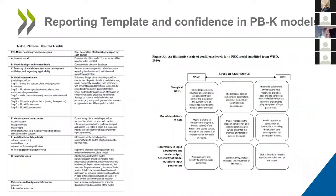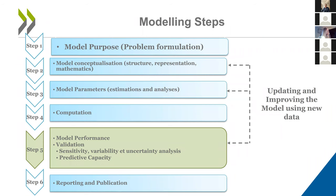As Betty illustrated, the guidance contains a reporting template and a tool to assess confidence in a PBK model. As Cecilia highlighted, we have a number of modeling steps: the model purpose, model conceptualization, parameters, computation, and for regulatory applications we are interested in model performance, validation, particularly sensitivity, variability, and uncertainty analysis, and the predictive capacity of the model. We took a number of steps to develop generic PBK models in farm animals. First, we collect physiological data for that particular species associated with chemical parameters. We then collect chemical-specific parameters including physical-chemical properties, TK parameters, blood concentration, or concentration in various target organs or biological matrices.